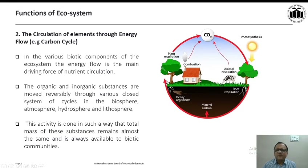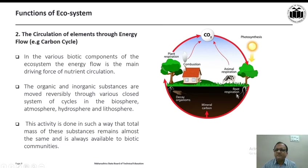Through the carbon cycle, we get carbon dioxide through plant respiration, through combustion (burning), and through animal respiration. Plants use sunlight and carbon dioxide through photosynthesis to prepare their own food in the form of carbohydrates, which contain carbon as a basic element. Through root respiration and the decaying of organisms, some carbon dioxide is also released, and like this, the cycle goes on.